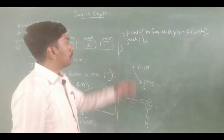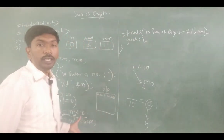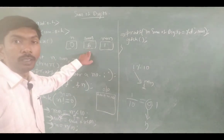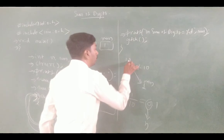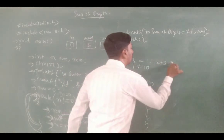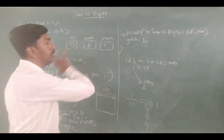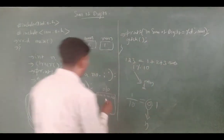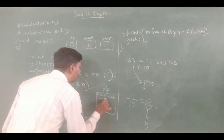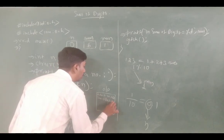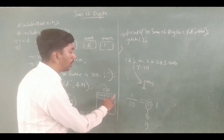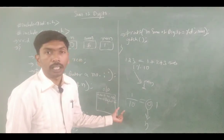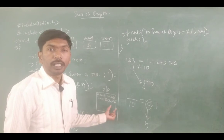After the while loop, the printf statement executes. The full execution gives sum value 6. For number 123: 1 plus 2 plus 3 equals 6. So the output is: sum of digits equals 6. When the user enters 123 and presses Enter, immediately sum of digits equals 6 is displayed.